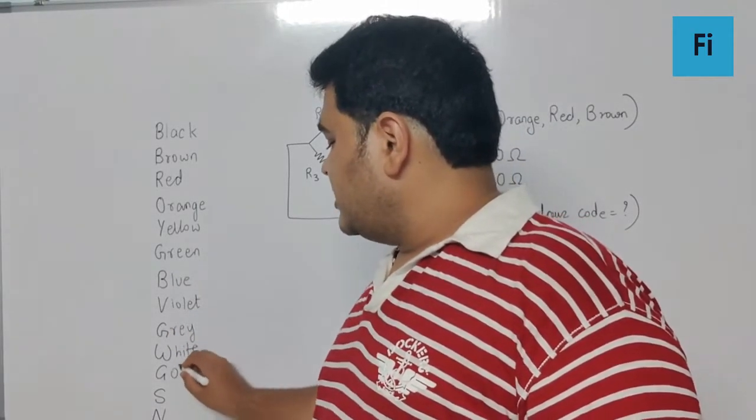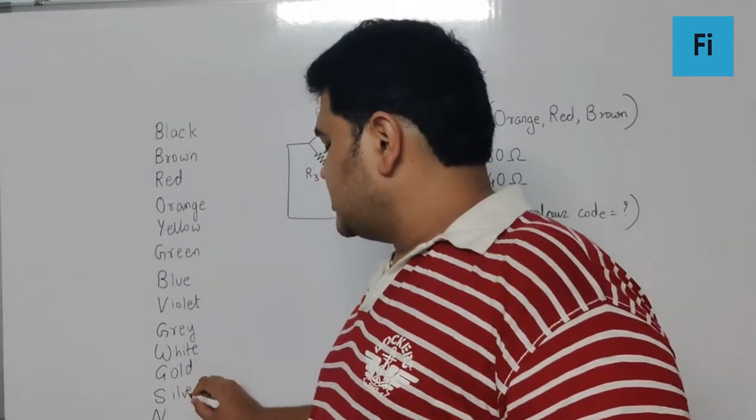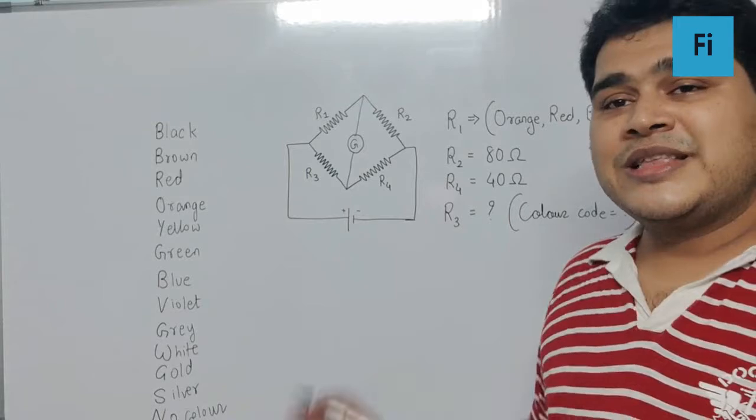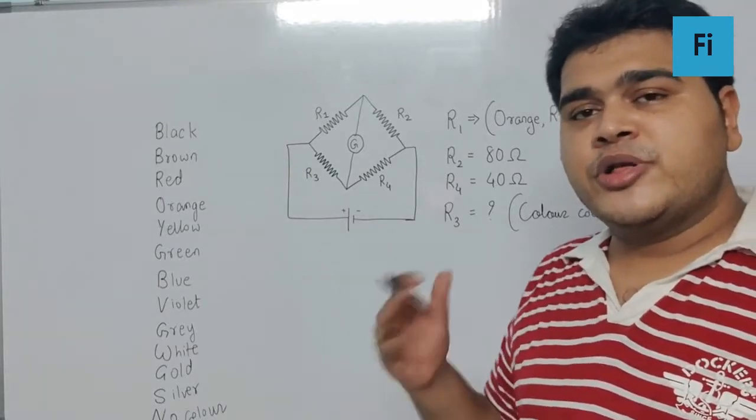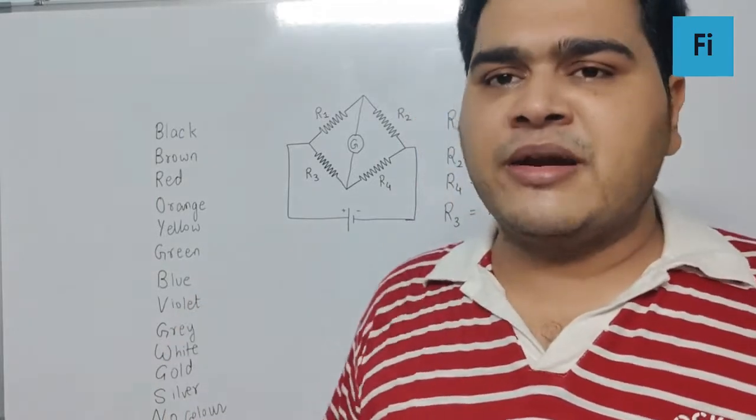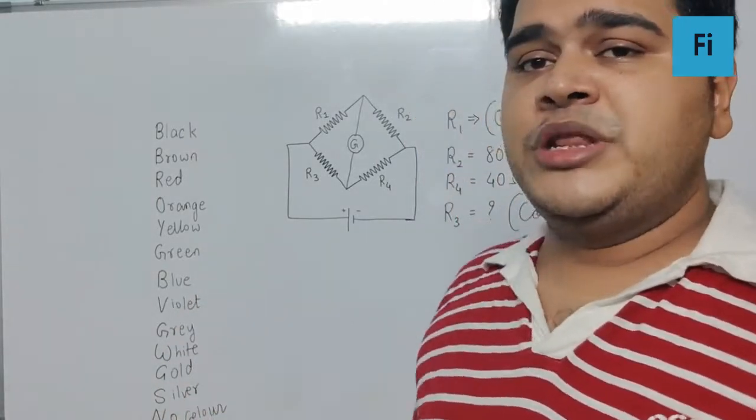G green, B blue, V violet, G stands for gray, W stands for white, this is gold, this is silver, and this is no color. Now the table for this particular color code is there in the NCERT books and different books you can refer, and that table you need to by heart.